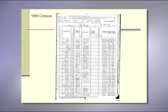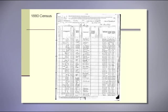On line 15, you'll see Andrew Davis is a white male, age 70, a ship carpenter born in Maine, with both his father and mother born in Maine — so you know you don't need to look at immigration records. The other people in the household are Mary, a daughter, age 41, a teacher, and Lucinda, also listed as a sister, who keeps house.